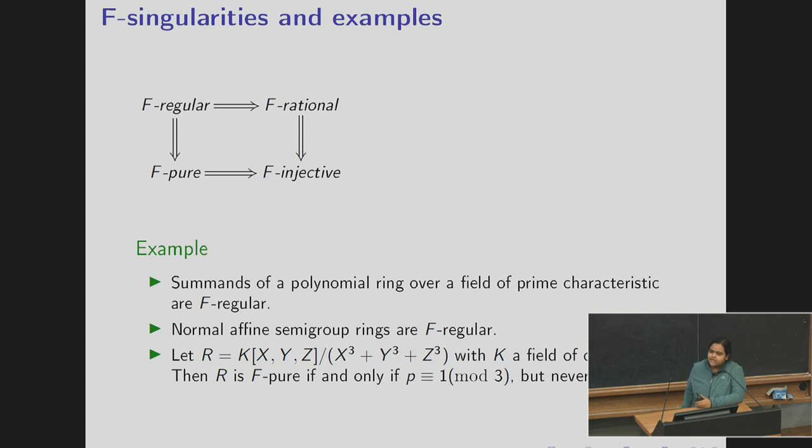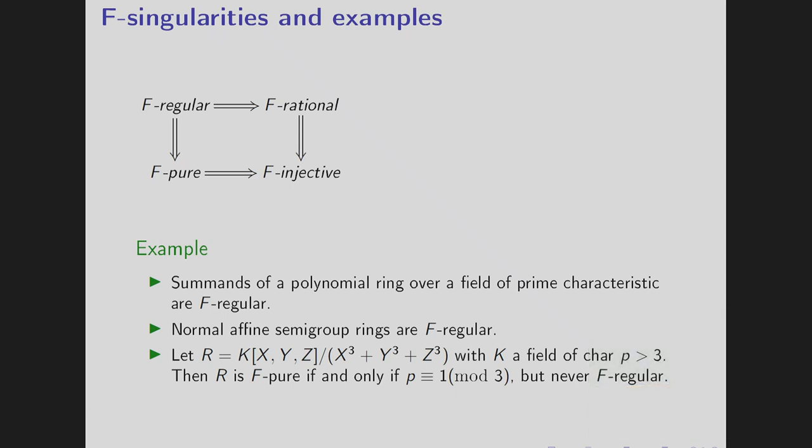Now the examples: summands of polynomial rings are F-regular. In particular, normal affine semigroup rings are F-regular. Now again these examples appear in the lecture of Professor Watanabe. That R is a ring K[X,Y,Z] modulo Xq plus Yq plus Zq where p is greater than 3 the characteristic. Then R is F-pure if and only if p is congruent to 1 mod 3 but it's never F-regular. And this example actually shows that the F-singularity really depends on the characteristic. And the implications are strict implication.